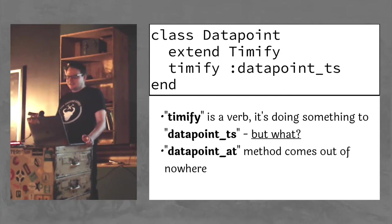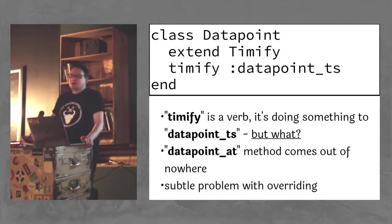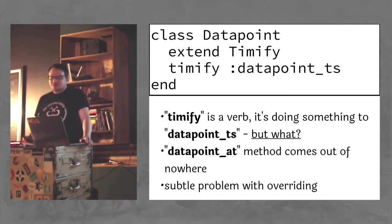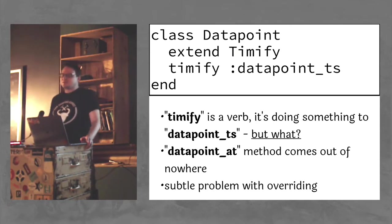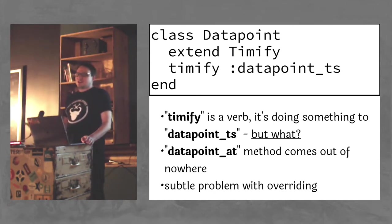What is it doing to the data point timestamp? When you read this, you cannot tell what is going on. You're just like, it's doing something, right? And then throughout the code, you might notice that there's this data point at method that people are using all over the place. Where did that come from? You can take an educated guess and be like, I guess timeify must be doing that, but it's not clear from this interface that that's what's going on in any way.